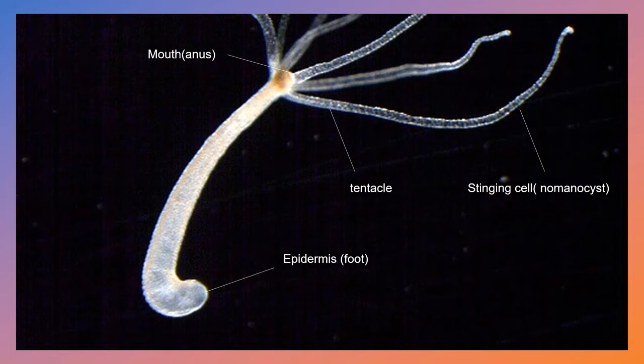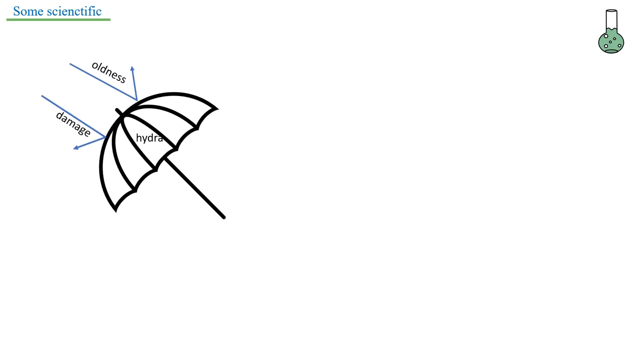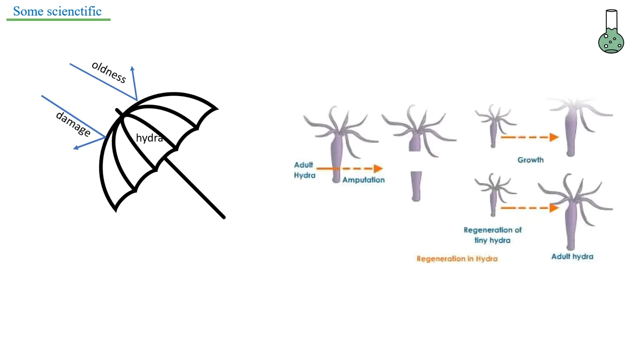It kind of poops with its mouth, but it's okay. It's here because it's really cool - it can fight against aging and damage caused to it. If you cut it in half, you will have two hydra.